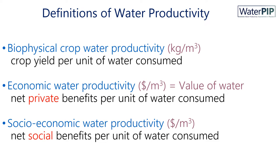There are several definitions of water productivity. The economic water productivity, or the value of water, is often defined as the net private benefits per unit of water consumed. Whereas the socio-economic water productivity is often defined as the net social benefits per unit of water consumed. And I say water consumed instead of water applied, because that water which is consumed is no longer available for other users.